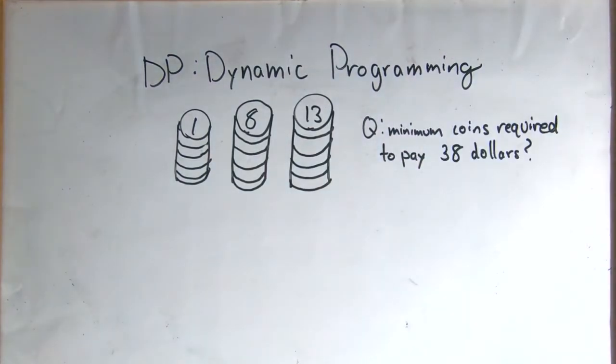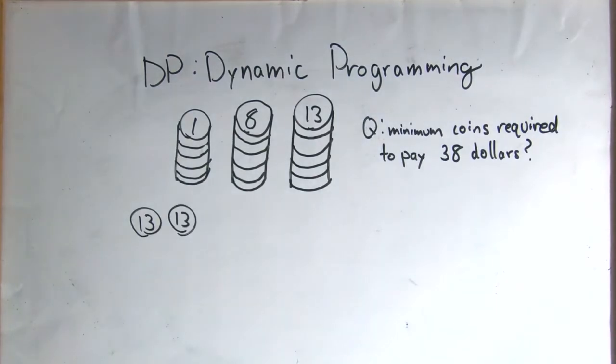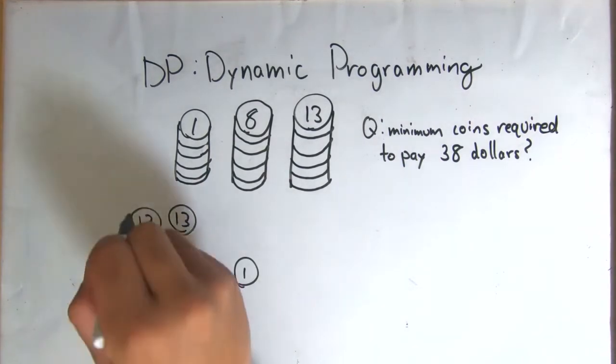You want to find out the minimum number of coins required to pay, say, $38. Though it would make sense to pay with the bigger coins first, and then head to smaller coins in order, that wouldn't necessarily be the minimum coins required.